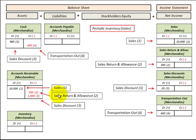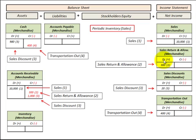Say we have a sales return where somebody returns $300 worth of goods: we credit or reduce accounts receivable by $300, and the corresponding debit entry is to Sales Returns, increasing it by $300.